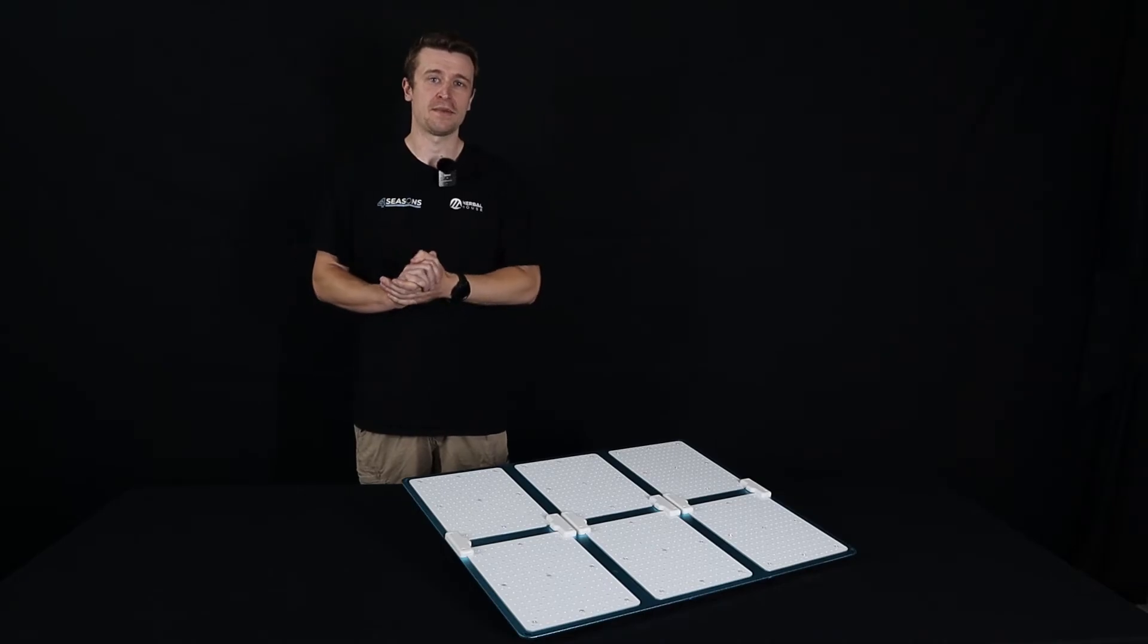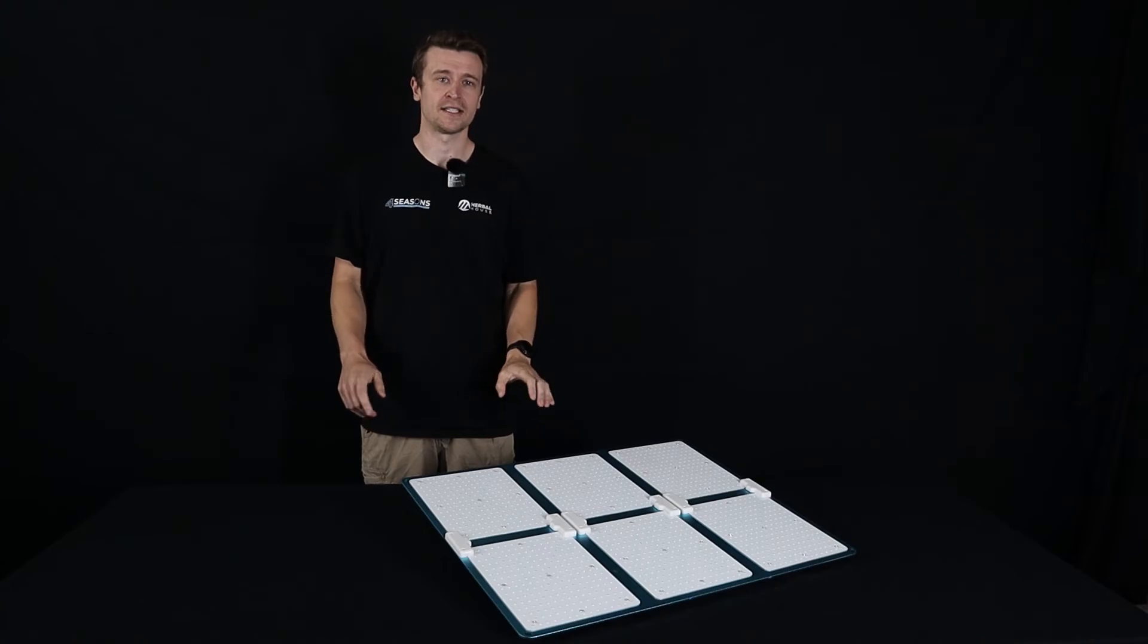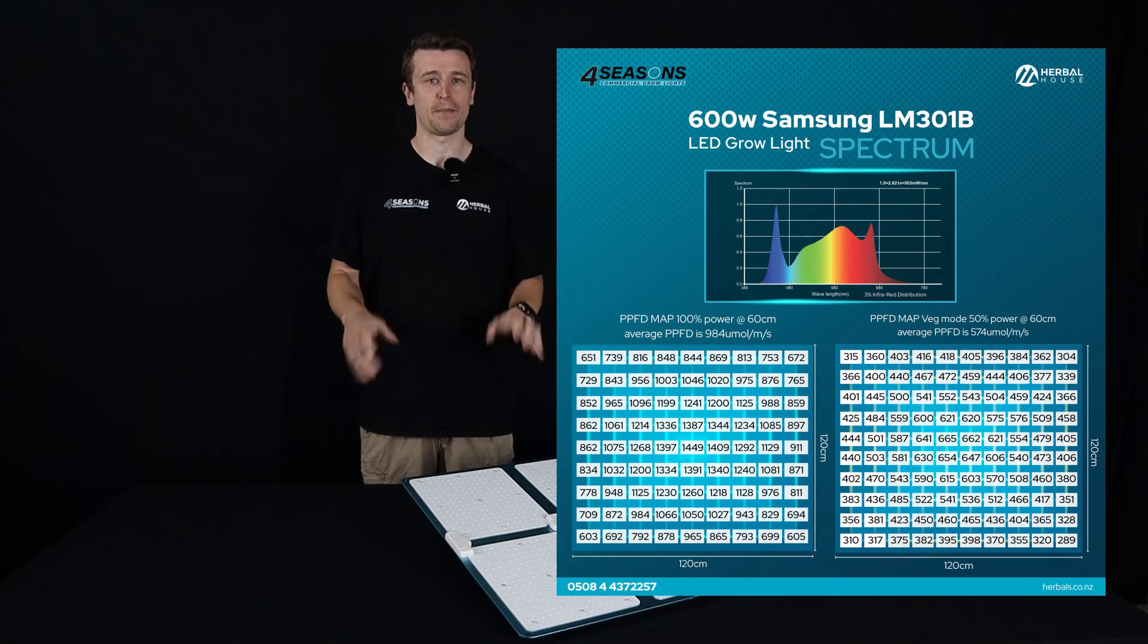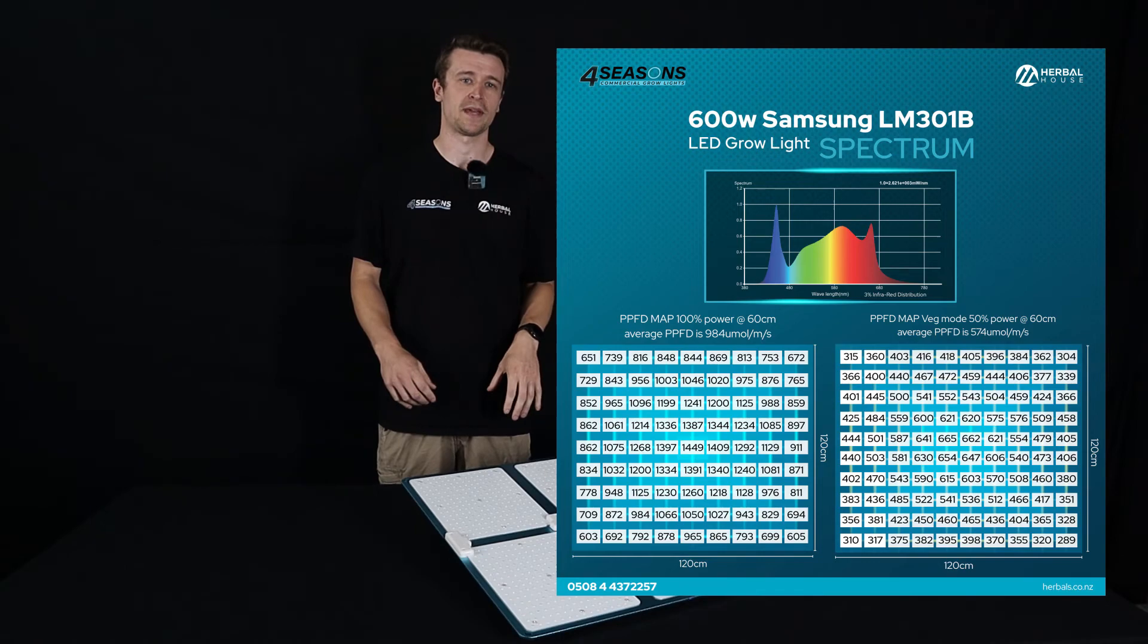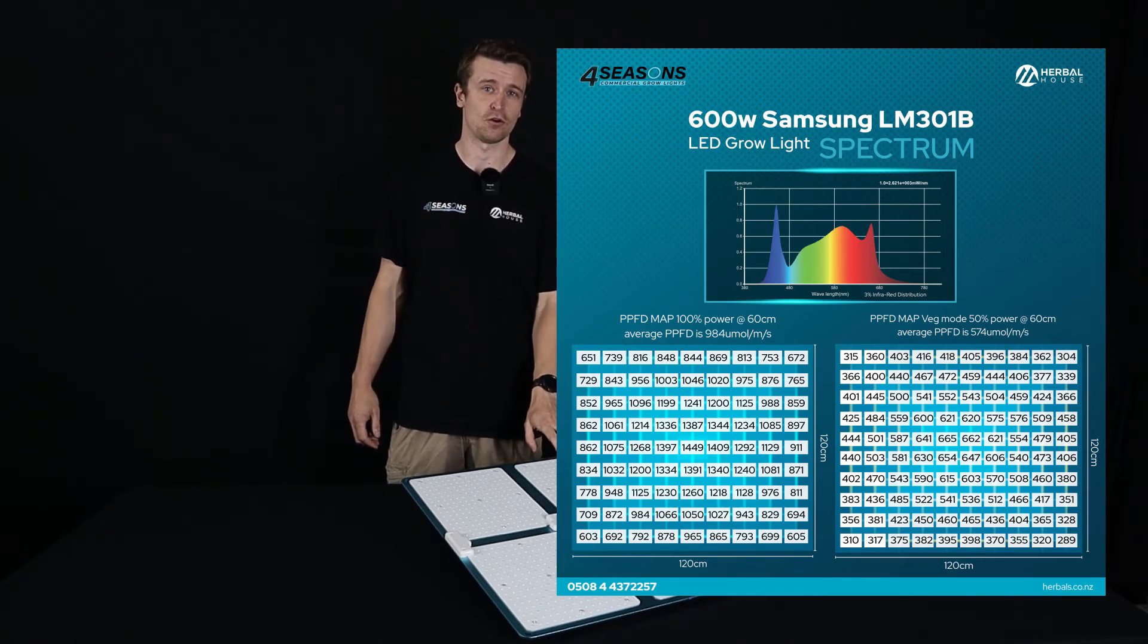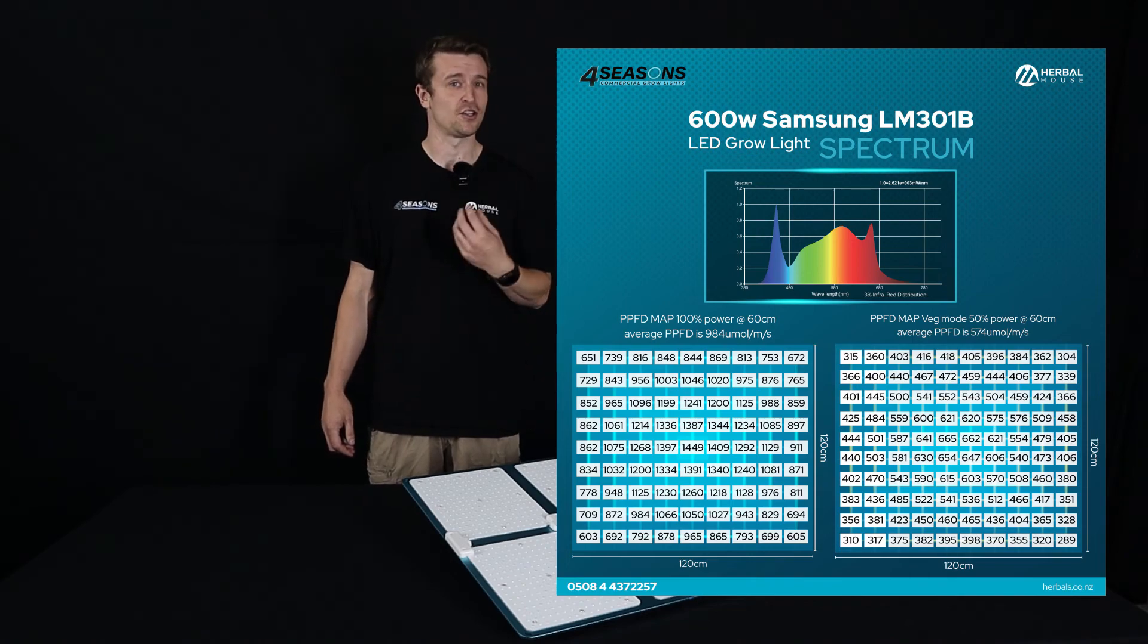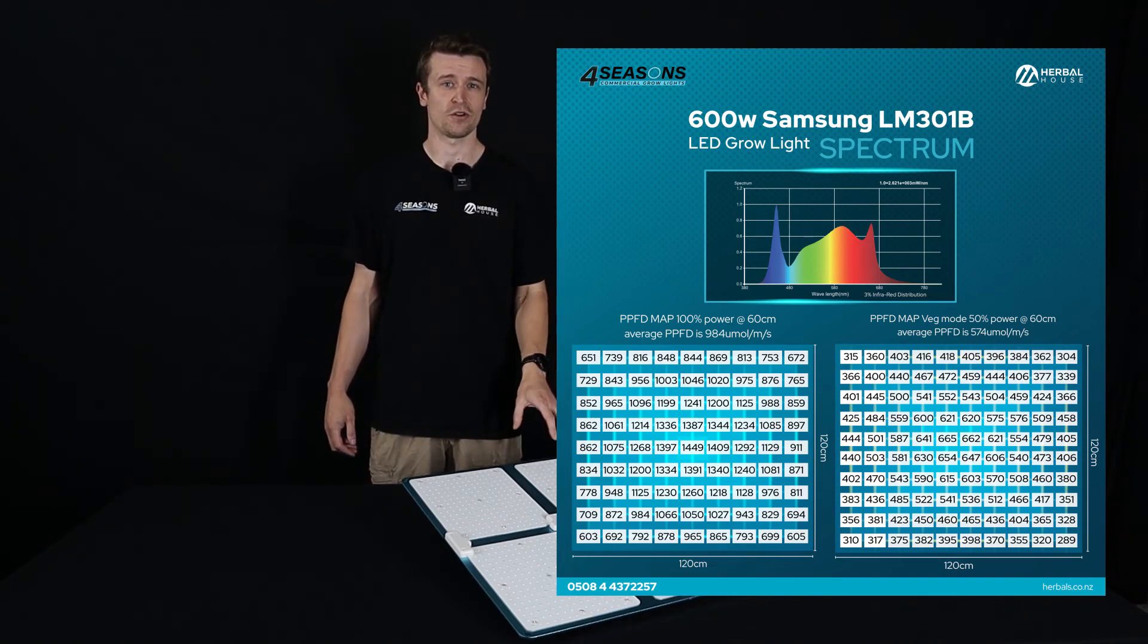Now that we've carried out the PPFD map in the 1.2 meter by 1.2 meter eclipse polar tent, we saw an average of 984 umoles across the entire grow space with a peak of 1450 dead center beneath the panel. That was setting this panel at 60 centimeters and running it at full power. That's really high numbers. When you're sitting at 1450 we highly recommend CO2 supplementing otherwise you're not going to make the most of it and you'll likely stress your plants out.